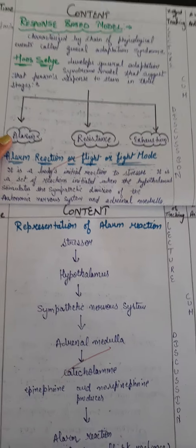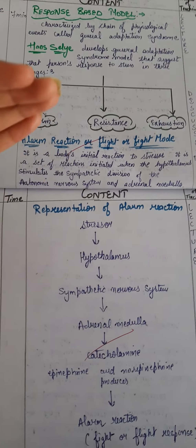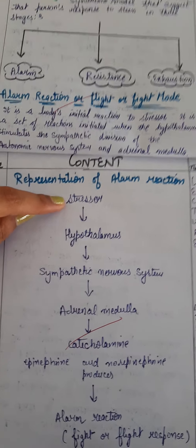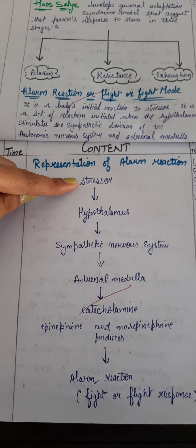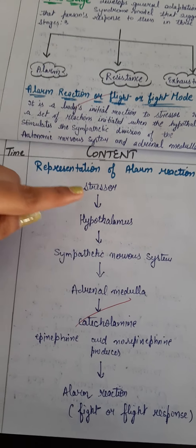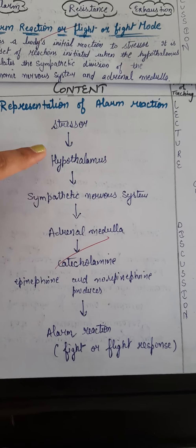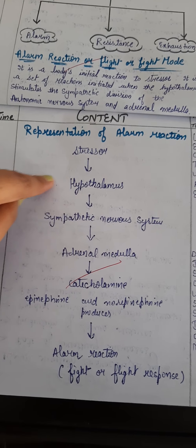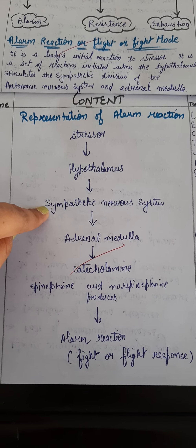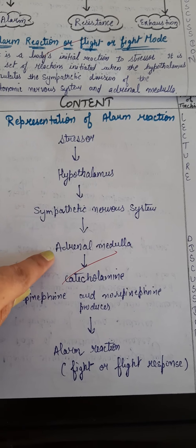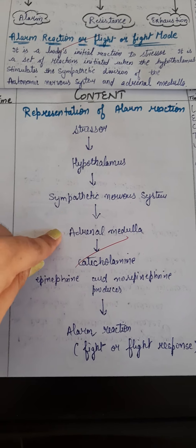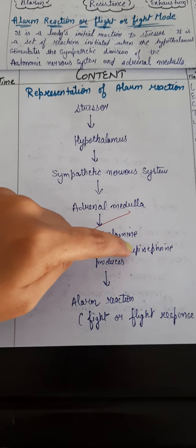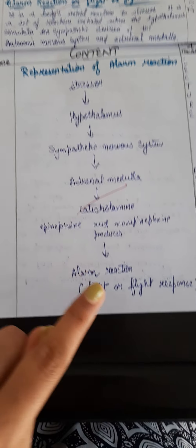In the alarm stage, our body gives an alarm response to the stressor. For example, the stressor is a dog barking and running behind you. The message goes to the hypothalamus, which then sends a message to the sympathetic nervous system. The hypothalamus and sympathetic nervous system send messages to the adrenal medulla — a gland situated on the kidneys — which secretes catecholamines: epinephrine and norepinephrine. These produce the fight-or-flight response.